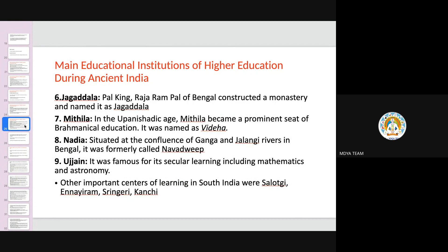Jagadala was a monastery constructed by Pala king Raja Rampal of Bengal and named Jagadala. It remained a center of Buddhist education for about 100 years. Most of the universities being discussed were destroyed during the 12th century when foreign invaders came and destroyed most of these institutions.